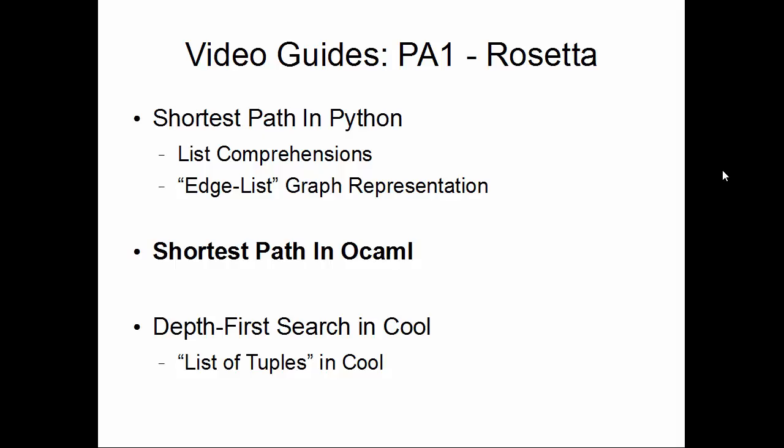This is Wes Weimer with another video guide for Programming Assignment 1, the Rosetta Stone. This time we will be implementing Dijkstra's shortest path algorithm in Objective Caml, a functional programming language that's strongly statically typed — more like Java than Python. I'm going to assume that you've seen our previous video walkthrough where we completed this task in Python, and we're going to pick up right where we left off.